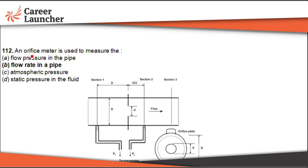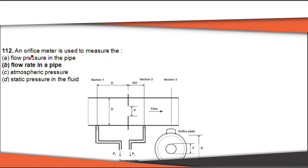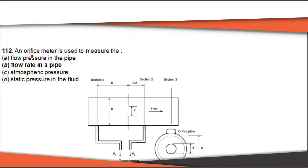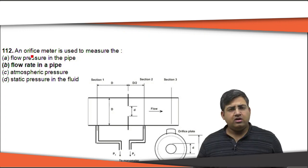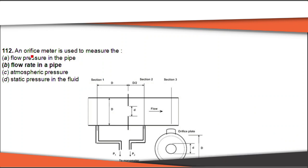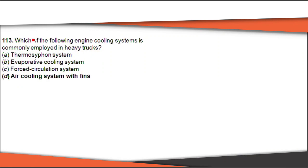The next question is about the orifice meter. What is an orifice meter? It is a type of plate used to measure the discharge or mass flow rate of a fluid in a given section. The right answer is B.